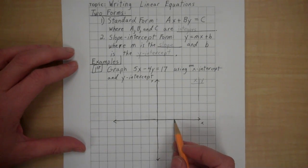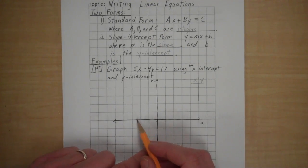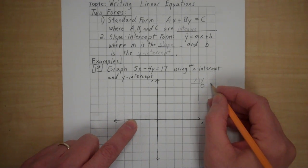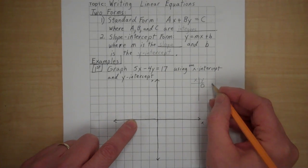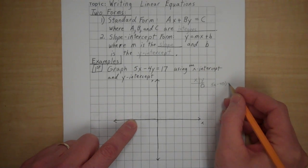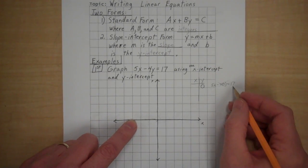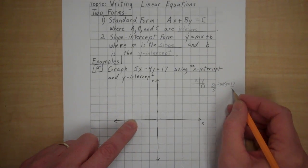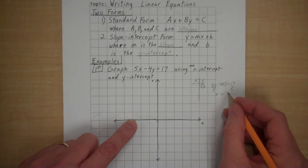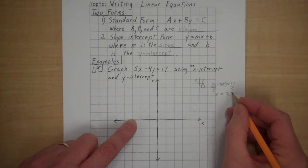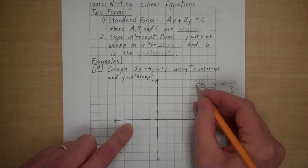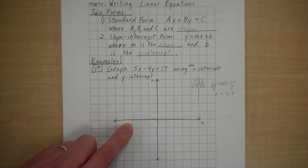Now I want to use the x-intercept. Well, the x-intercept is where it hits the x-axis, so the y-coordinate of the x-intercept is 0. So basically, I want to solve the equation 5x minus 4 times 0 equals 17. Well, that basically falls out. So 5x equals 17. I'll divide by 5, and x is equal to 17 divided by 5. 5 times 3 is 15 and 2 fifths. I think you'll find that to be 3.4. So when y is 0, x is 3.4. That is the x-intercept.